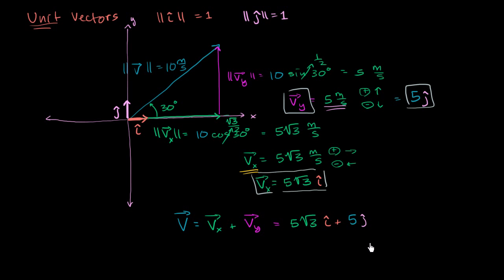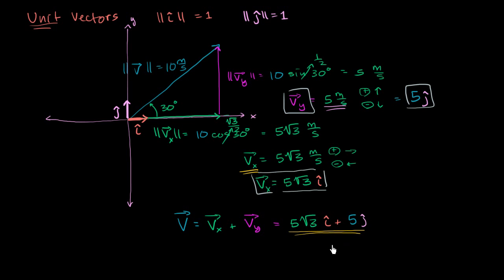And if you want to go into three dimensions — which you often will, especially as the physics class moves on through the year — you can introduce a vector in the positive z direction. You could define a vector k that goes into that third dimension. Although the standard convention in three dimensions is that k is the up-and-down dimension. But this by itself is already pretty neat, because we can now represent any vector through its components, and it's also going to make the math much easier.